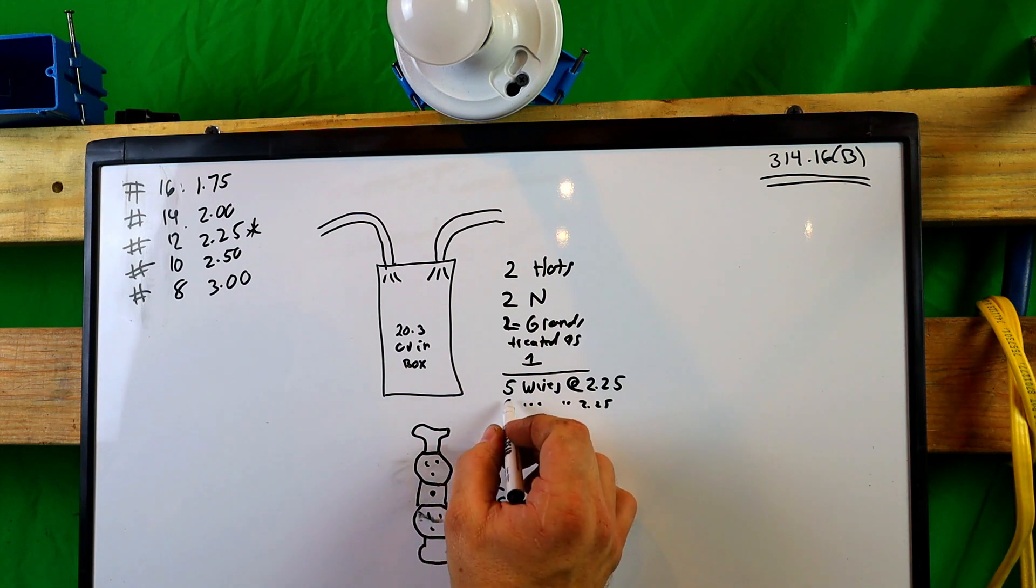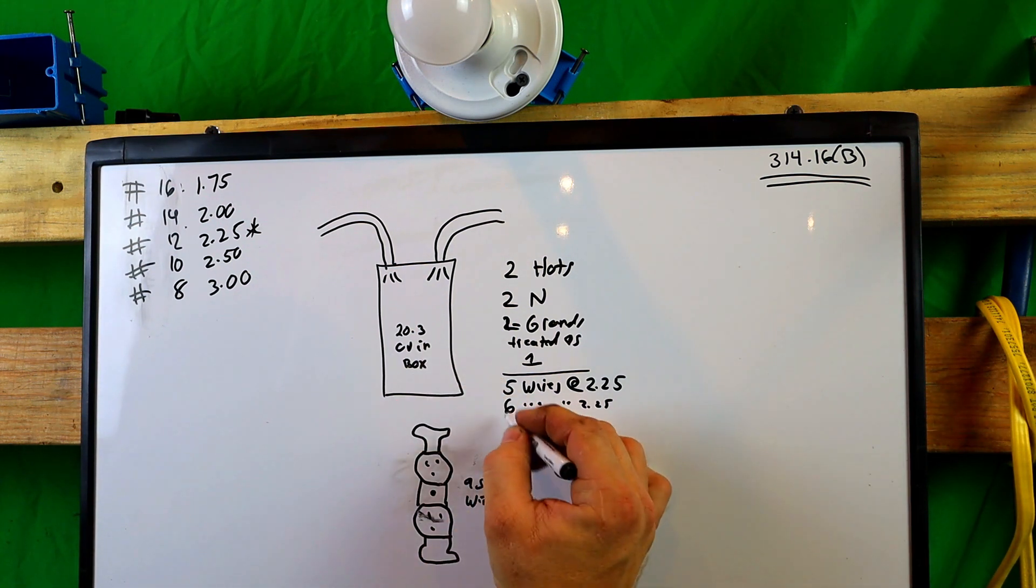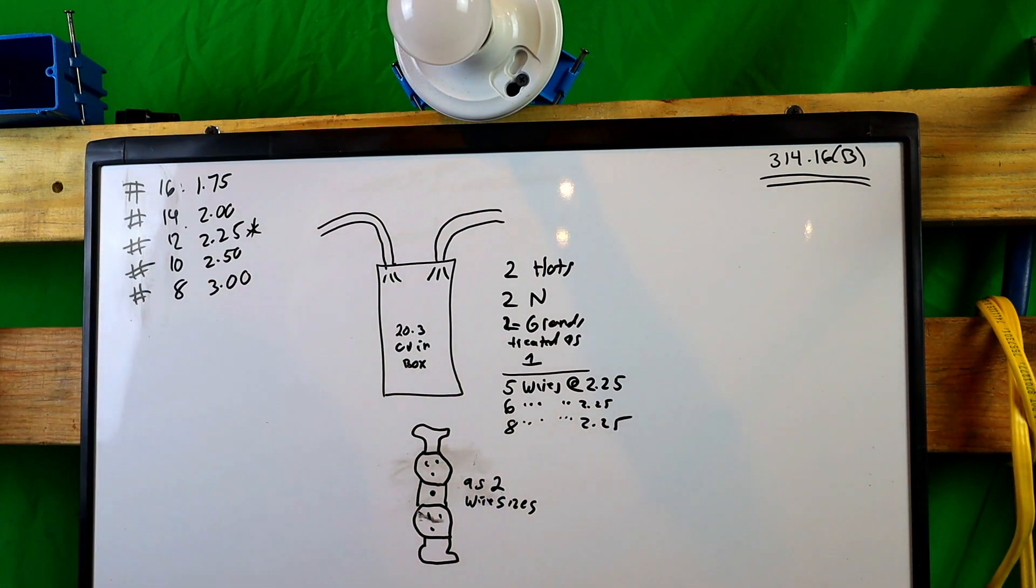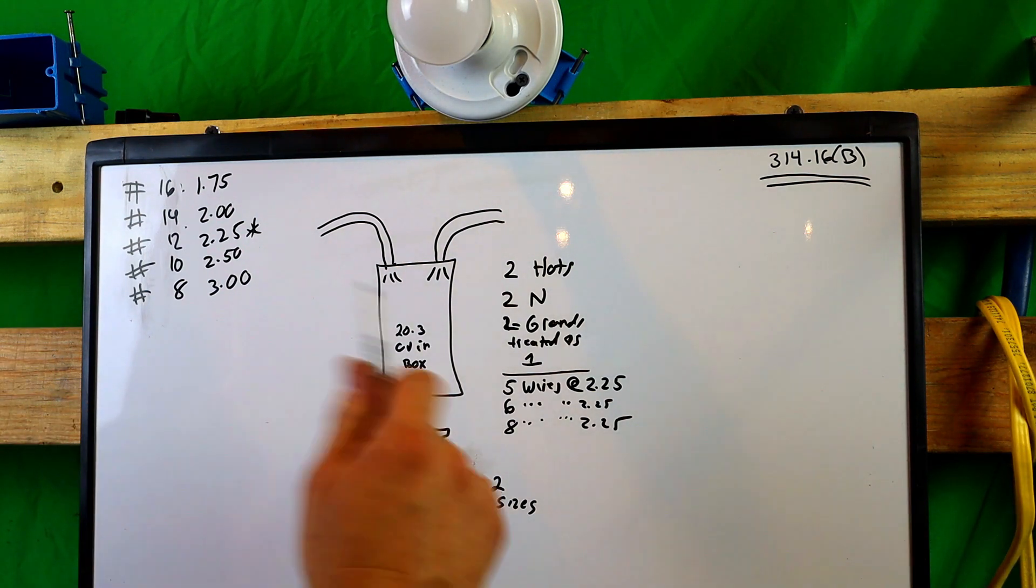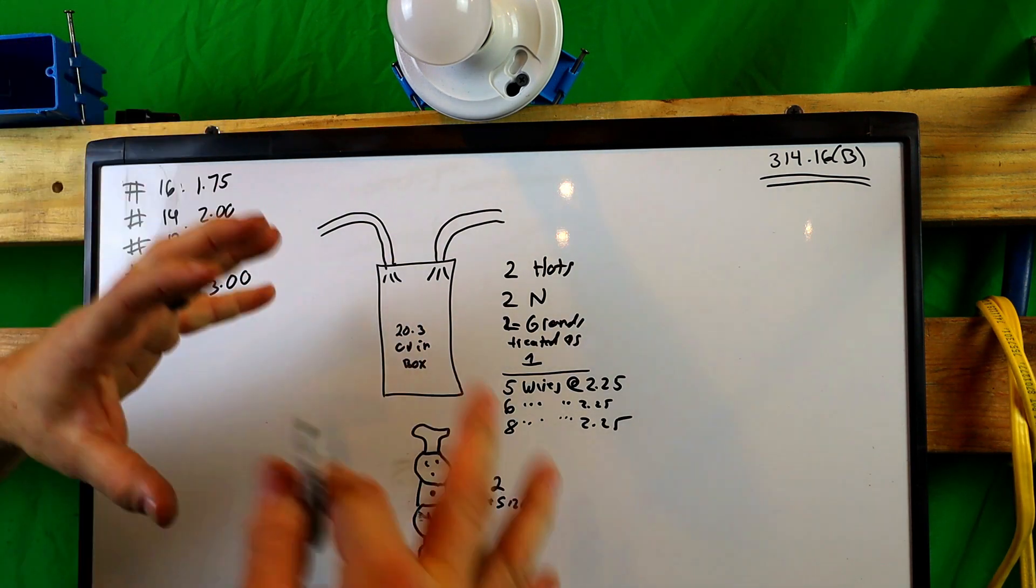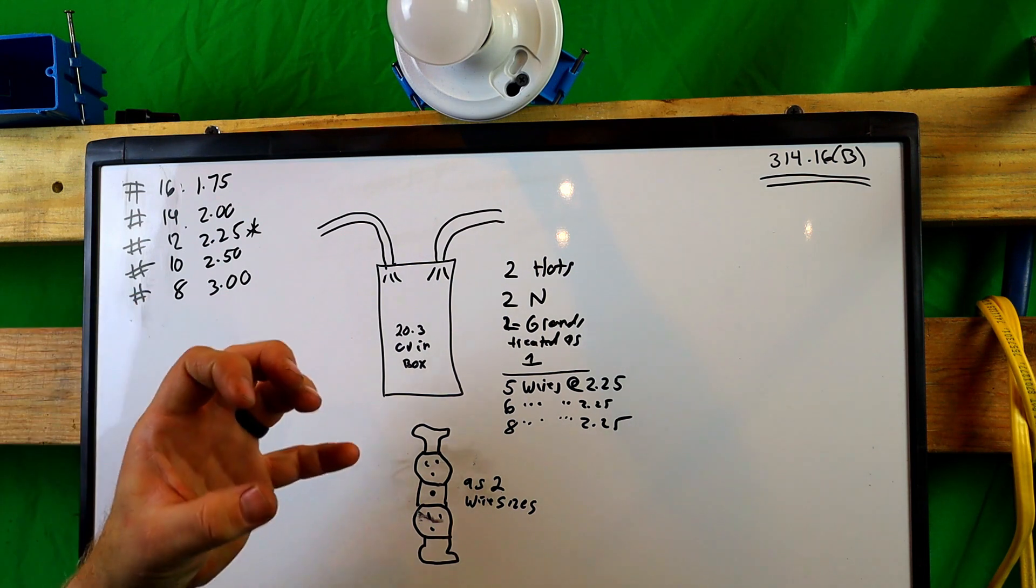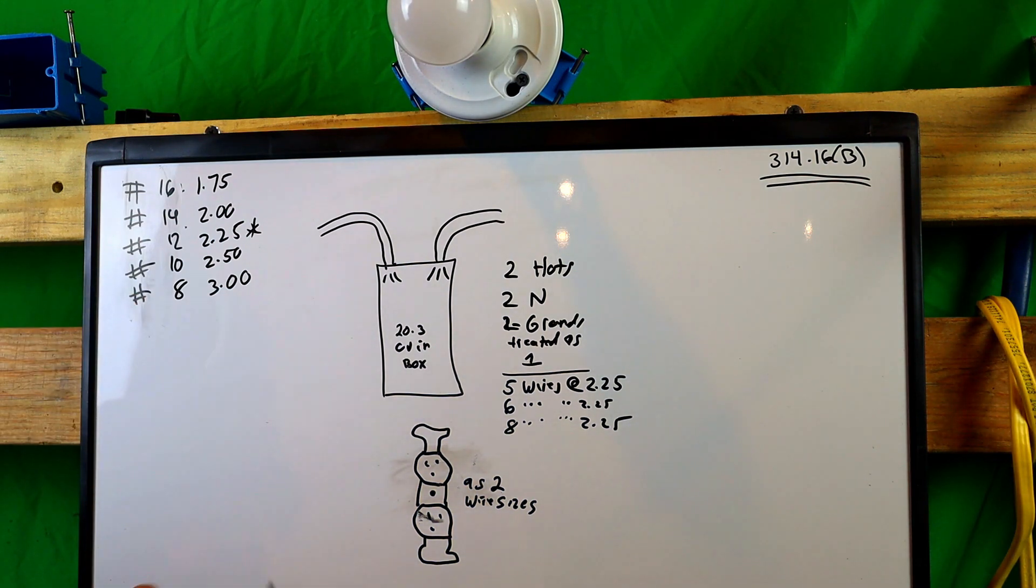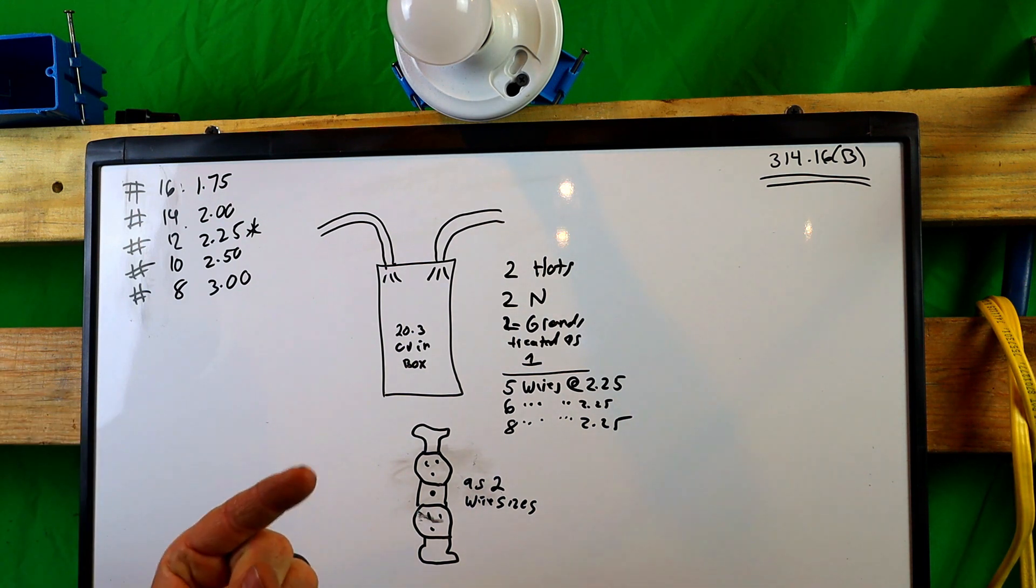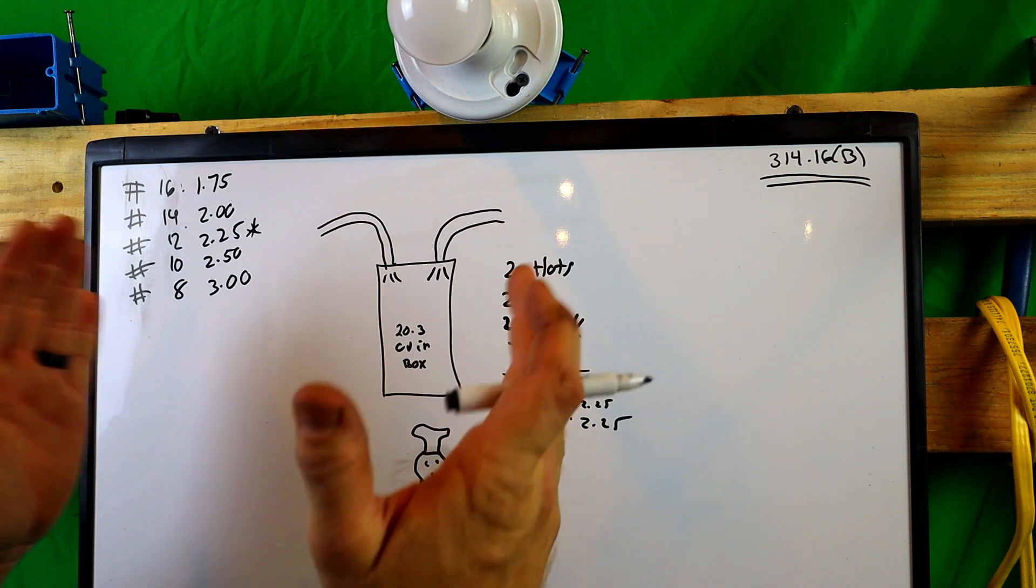So every device that you use has to be counted as two wire sizes. Alright. So now what we got, we have, we had six, right? So we have two more. So now we have eight times 2.25. Alright. Is that all we have? Yes. Now we're going to get into more deeper. This is just the basics right here. I'm going to dig a little deeper later and tell you about, do you count the wire nuts? Do you count extra wires you put it in there? If this was not this box and it had to put a Romex connector, would you count that?